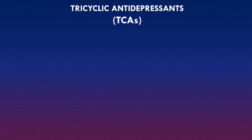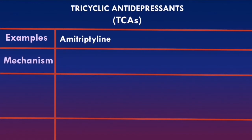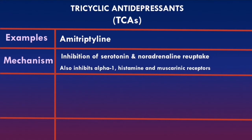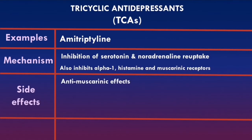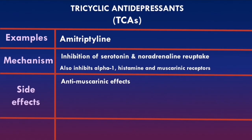Tricyclic antidepressants are generally used third-line. The main example is amitriptyline. TCAs inhibit serotonin and noradrenaline reuptake but also inhibit alpha-1, histamine, and muscarinic receptors. Because TCAs inhibit muscarinic receptors, they have strong anti-muscarinic effects similar to atropine, including tachycardia, urinary retention, confusion, hallucinations, dry mouth, constipation, and many other anti-muscarinic effects. Sedation occurs due to histamine receptor inhibition, and orthostatic hypotension is due to inhibition of alpha-1 receptors.